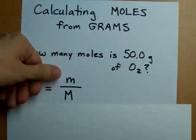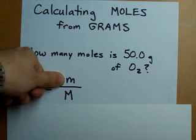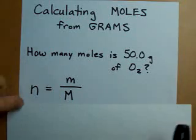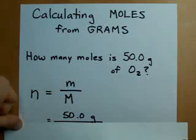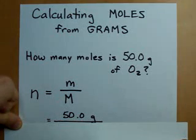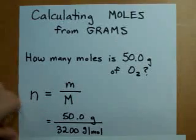Here we need the number of moles for 50 grams of oxygen. Little m is 50 grams. The molar mass of oxygen you can calculate to be 32 grams per mole.